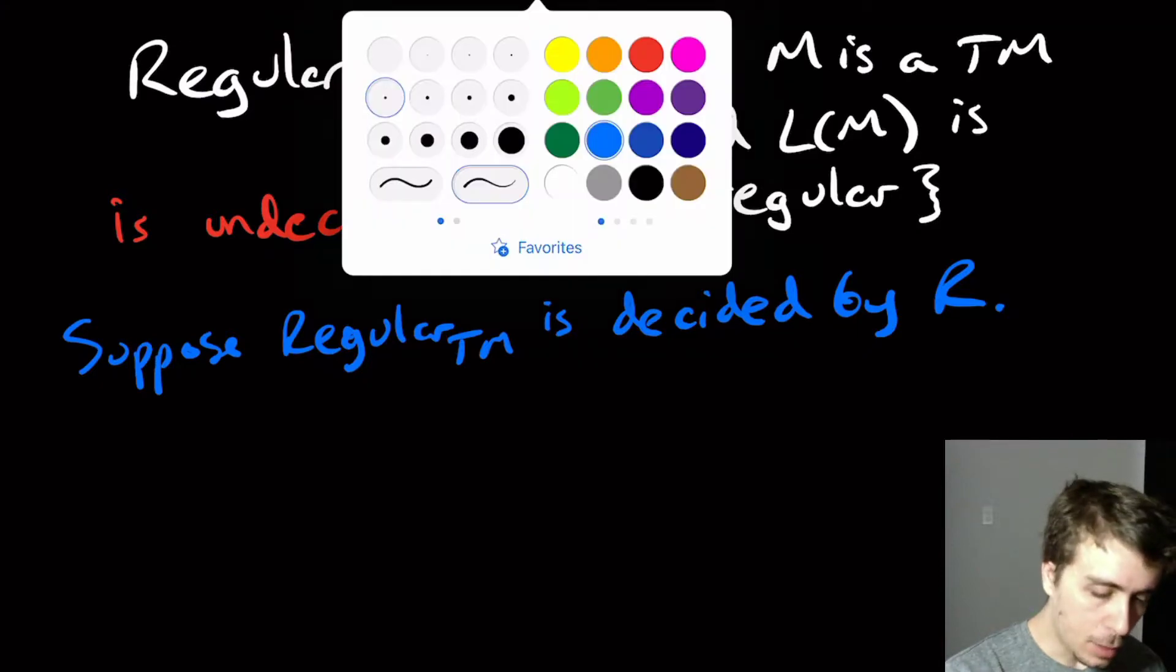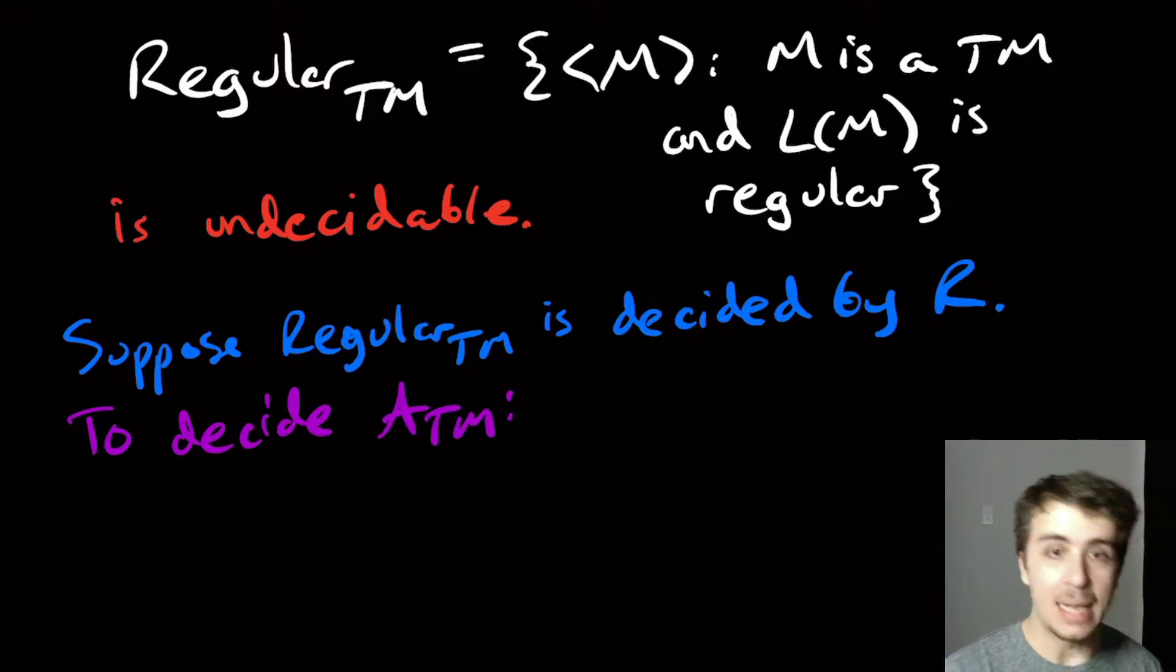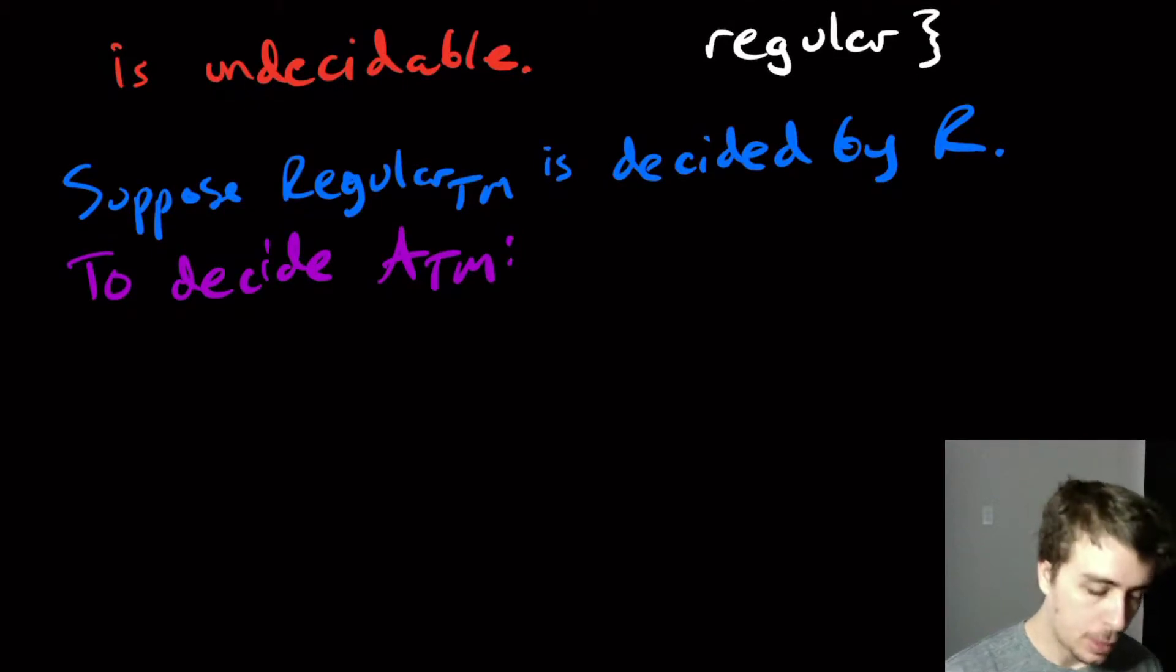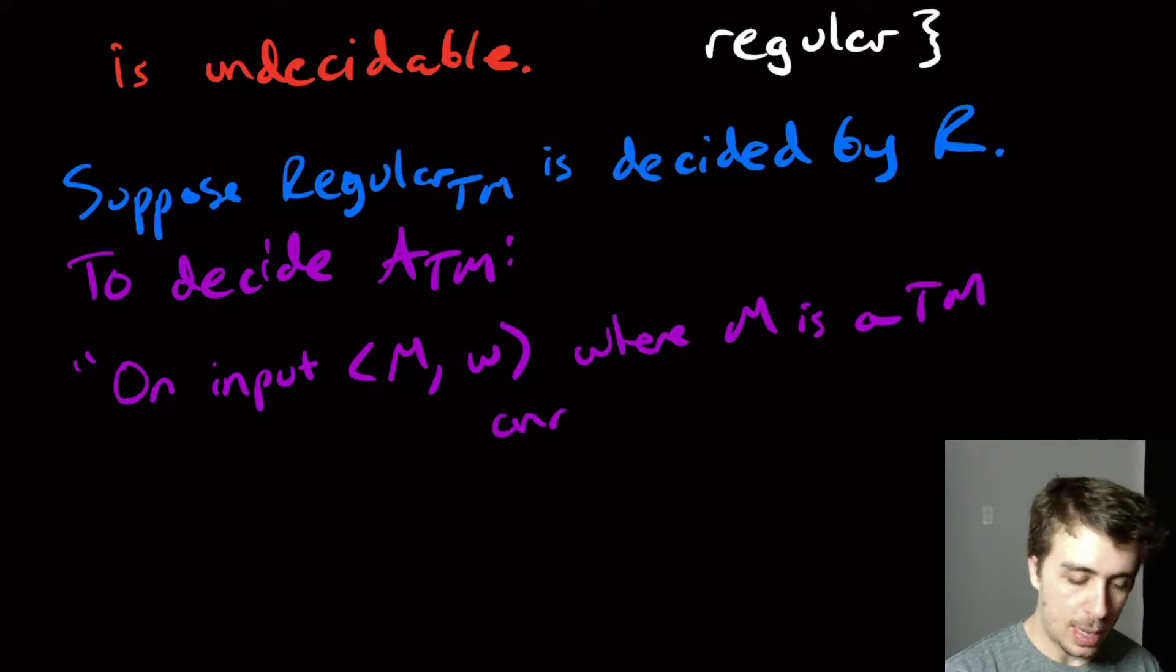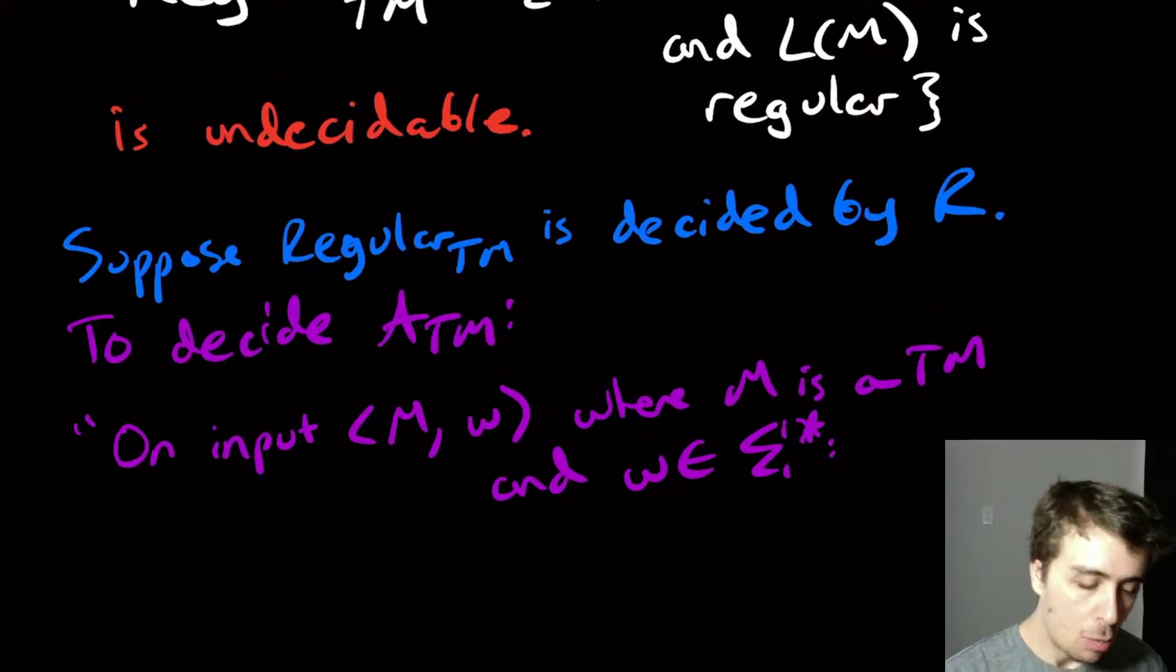Then we'll try to decide the ATM problem. Remember, ATM takes a Turing machine and an input W. So input M, W, where M is a Turing machine and W is just an arbitrary string.